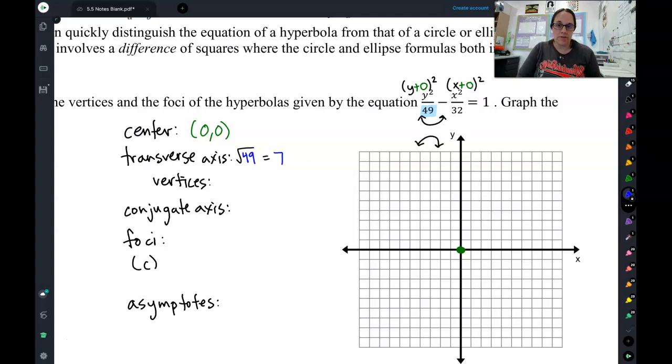Now, to do the transverse axis, I now need to know, does this transverse axis go 7 to the left and 7 to the right? Or does this transverse axis go 7 up and 7 down? To answer that, we look at what the 49 is paired with. So this 49, where we got the 7, is paired with the y.